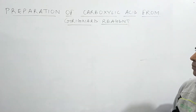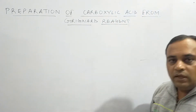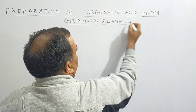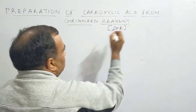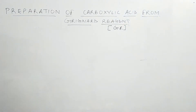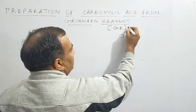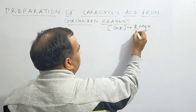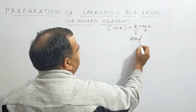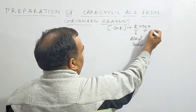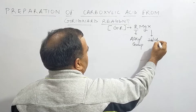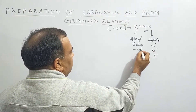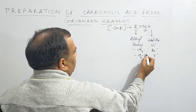Today we will discuss the preparation of carboxylic acid from the Grignard reagent. Grignard reagent is generally written as RMgX, where R stands for alkyl group and X stands for halide — it may be Cl⁻, Br⁻, or I⁻. The alkyl group R may be methyl, ethyl, and so on.